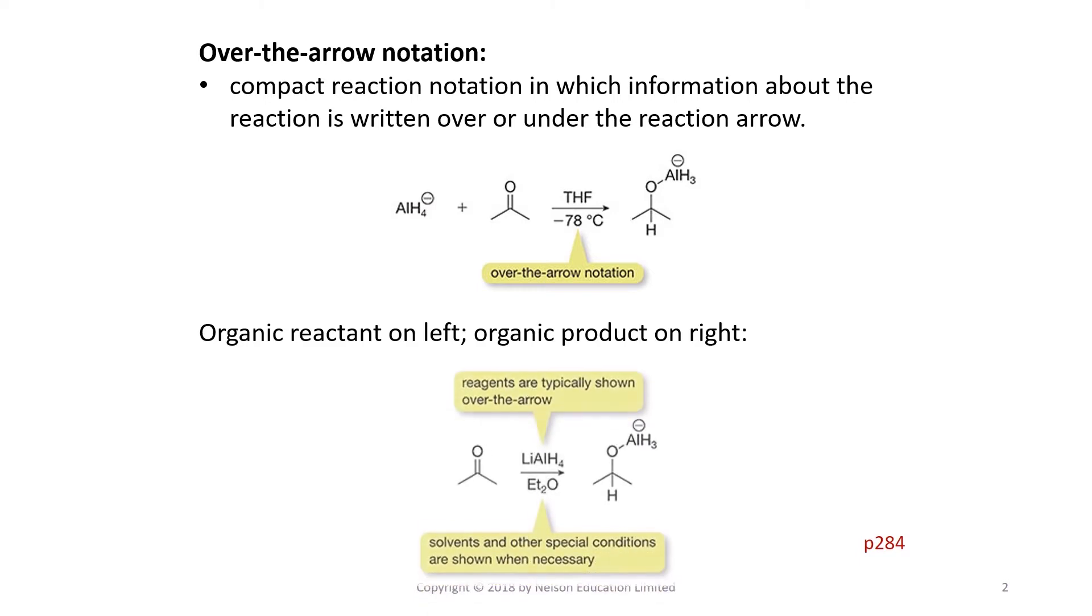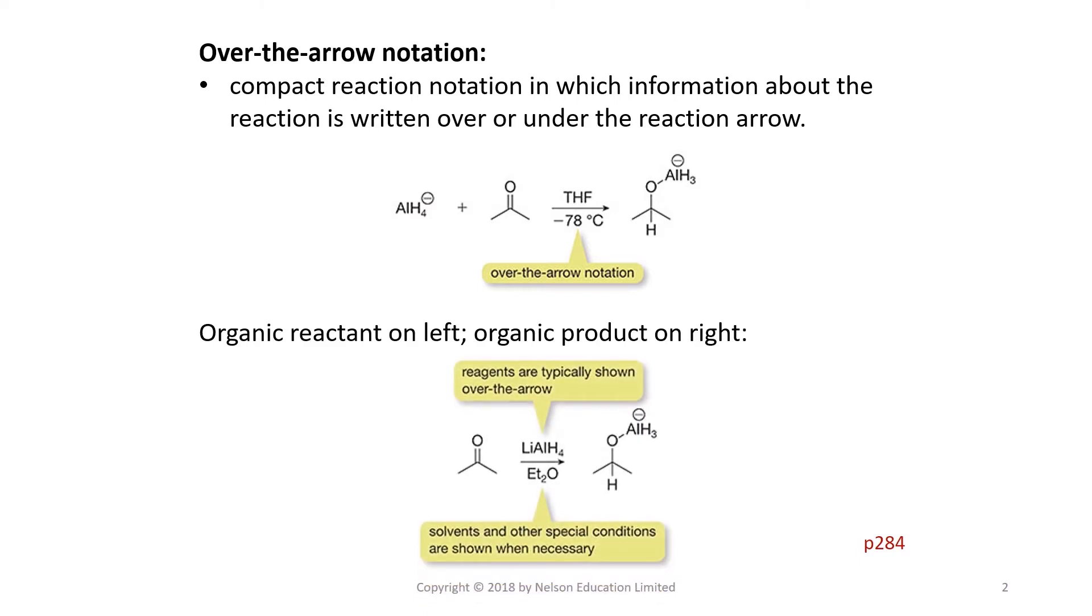In the second example, the main functional group is written to the left of the arrow because it is the organic molecule that will be the focus of the chemical transformation. And the reagents and other conditions are written above and below the arrow. This is called over-the-arrow notation.